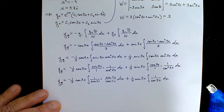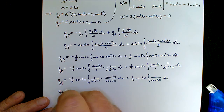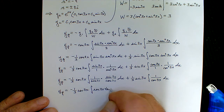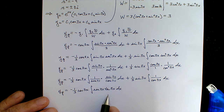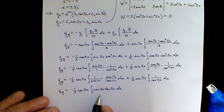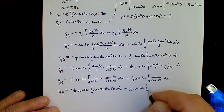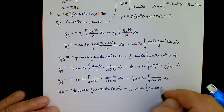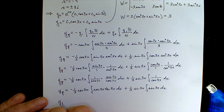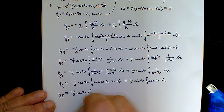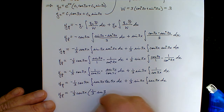So we're left with: minus 1/3 cosine(3x) times the integral of secant(3x)·tangent(3x) dx, plus 1/3 sine(3x) times the integral of secant(3x) dx. Now we're ready to integrate. Secant(3x)·tangent(3x) integrates to secant(3x), but because of the argument 3x we modify by 1/3, giving 1/3 secant(3x). Then we have plus 1/3 sine(3x) times the integral of secant(3x) dx.